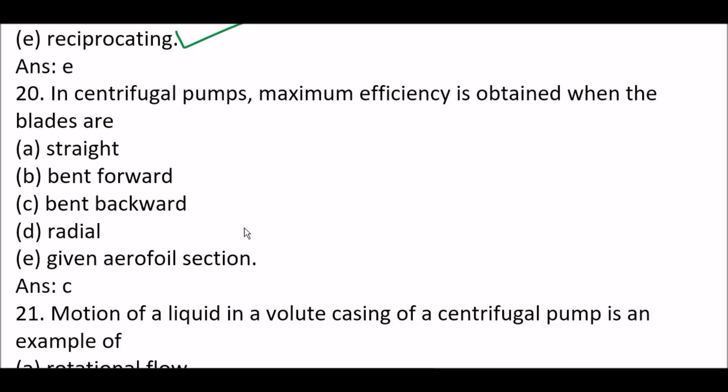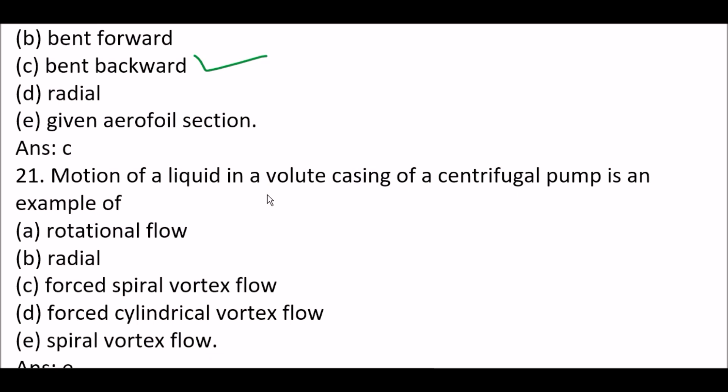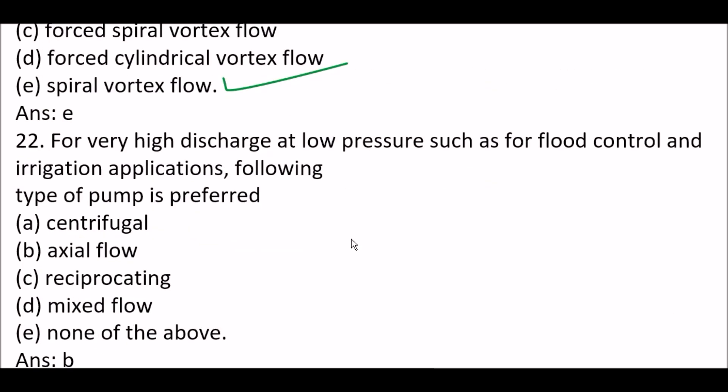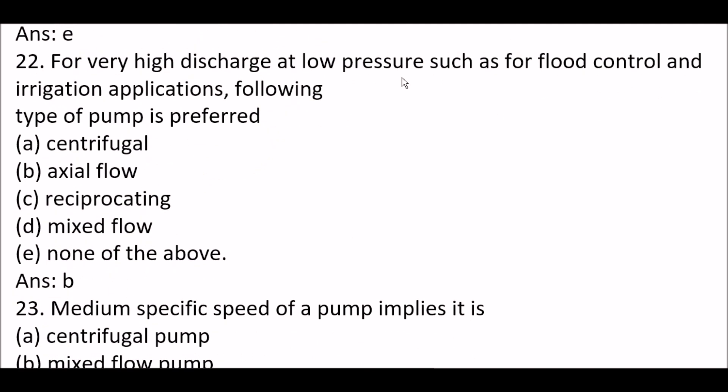Next question. In centrifugal pumps, maximum efficiency is obtained when the blades are bent backward. Next question. Motion of a liquid in a volute casing of a centrifugal pump is an example of spiral vortex flow.